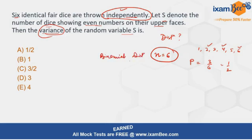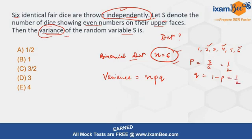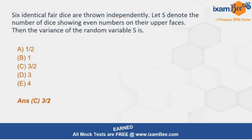In a binomial distribution, the probability of success and failure sum to one, and the trials are independent — both conditions are satisfied here. The variance for a binomial distribution is given by n·p·q, where p is the probability of success and q is the probability of failure, which is one minus p, also equal to half here. So variance = 6 × (1/2) × (1/2) = 3/2. Hence the correct answer is option C, which is 3 by 2.